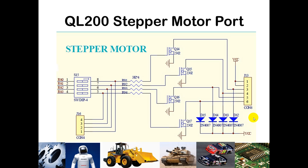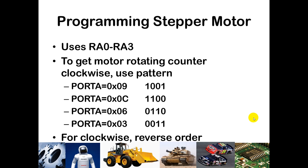All you need to do is change a set pattern on port A on the three pins, and that will get your stepper motor to move. You're going to use RA0 through RA3, so you'll need to make sure in your TRIS-A register those four pins are set as outputs. The four patterns that need to run in a row are 0x9, 0xC, 0x6, and 0x3 — effectively moving 1s and 0s and activating two of the electromagnets at any given time. If you have that pattern repeating over and over, that gives rise to clockwise motion.